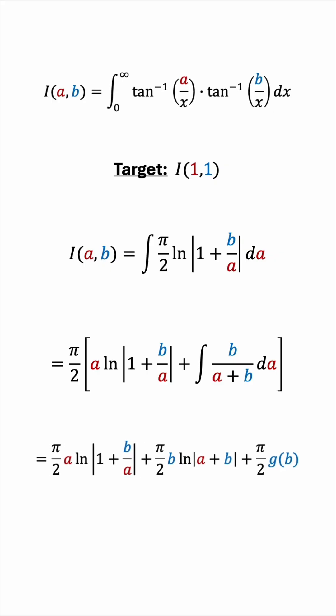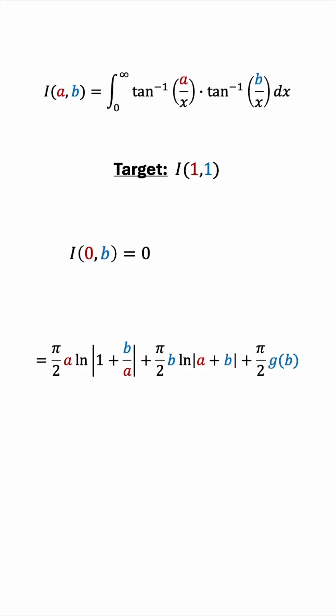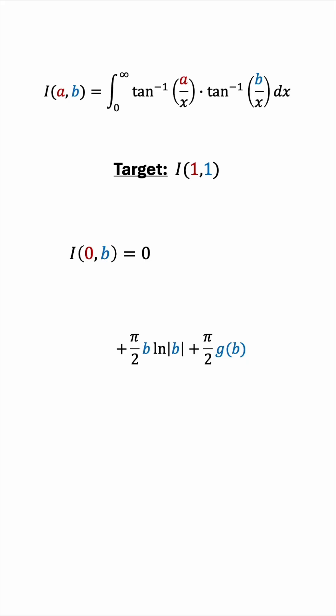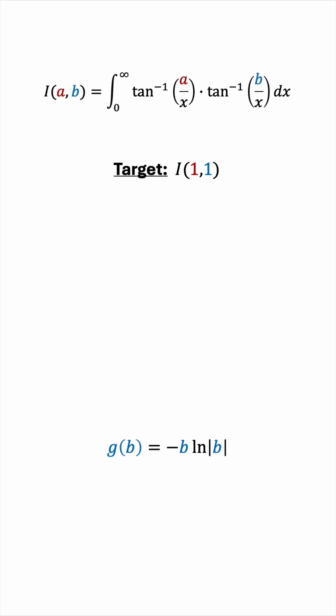So I(a, b) equals π/2 times [a·ln(1 + b/a) + b·ln(a + b) + g(b)], but we have an unknown function g(b) to determine. We can't substitute b = 0 this time, because that would give us g(0), which is still unknown. Instead, we substitute a = 0, because this also makes the original integral vanish. The first term cancels since it has a factor of a, leaving π/2 times b·ln(b) + π/2 times g(b) = 0, so g(b) = −b·ln(b). Now we can substitute this back to get the full expression for I(a, b).